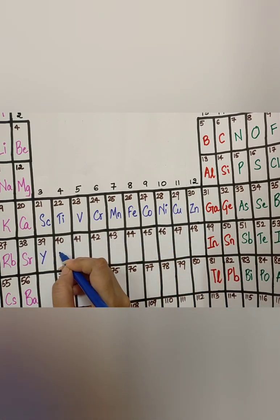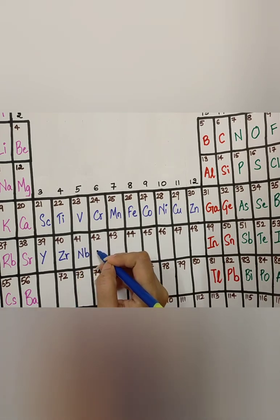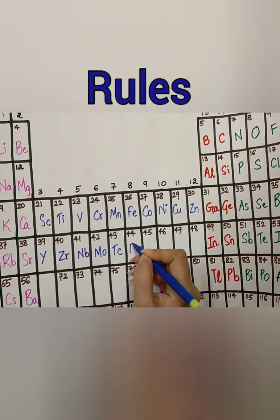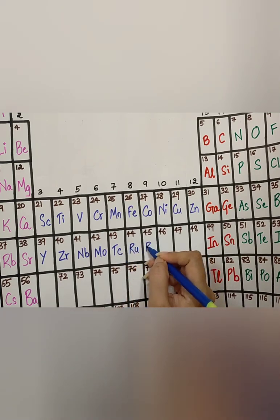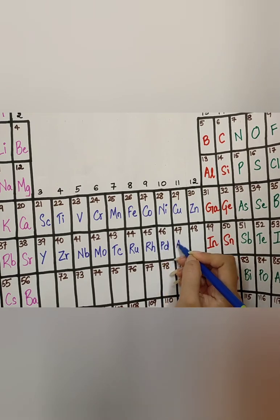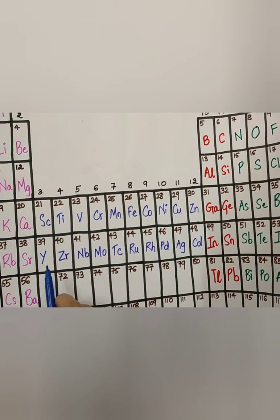The elements are, Yard, Zara, Noble, Motivational, Technical, Rules, Rhymes, Padhu, Aage, Chhodhu.